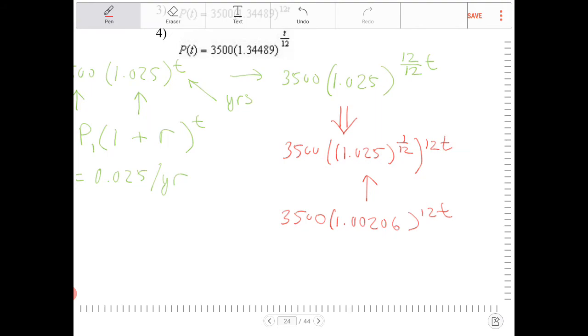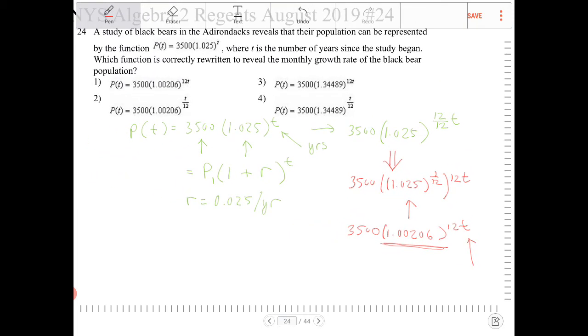So keep in mind right now, this t is still in years. This is saying if I put in, if I put 1 in, there are 12 months, so therefore I'm taking this value and raising it by 12. So essentially we're doing the same thing. It's just this equation has been rewritten or re-expressed so that we can then see what the monthly rate of growth is.